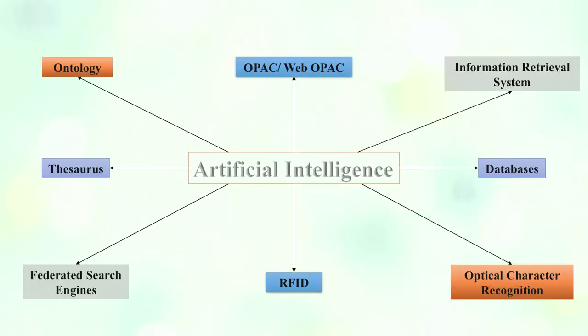The maximum use of artificial intelligence in library operations is in information retrieval systems. Online information retrieval and digital databases use maximum AI applications. Databases like Web of Science, Scopus, AGRIS, INIS, and MEDLARS provide filter search options and the ability to select the best results. Another very significant application is RFID, which reduces human intervention and helps in tracing and tracking library materials inside the library.